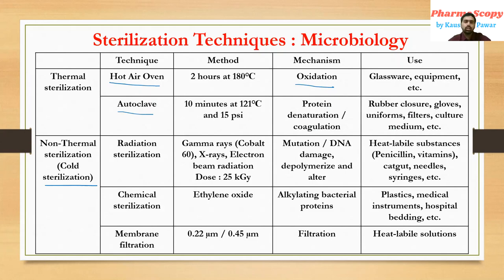In cold sterilization: radiation sterilization uses gamma rays from cobalt-60, X-rays, and electron beam radiation, at a dose of 25 kGy. It acts by mutation, DNA damage, or depolymerization of DNA, and is used for heat-labile substances like penicillin, vitamins, catgut, needles, and syringes. Chemical sterilization uses ethylene oxide gas to sterilize plastics, medical instruments, and hospital beddings, acting by alkylating bacterial proteins.